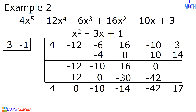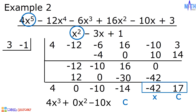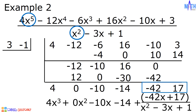The degree of the dividend is 5 and the degree of the divisor is 2. If we divide x⁵ by x², the answer is x³. Therefore, the degree of the quotient is 3. 4 is the coefficient of x³, 0 is the coefficient of x², negative 10 is the coefficient of x, and negative 14 is the constant term. For the remainder, negative 42 is the coefficient of x and 17 is the constant. The answer is 4x³ plus 0x² minus 10x minus 14, plus (negative 42x plus 17) over x² minus 3x plus 1.